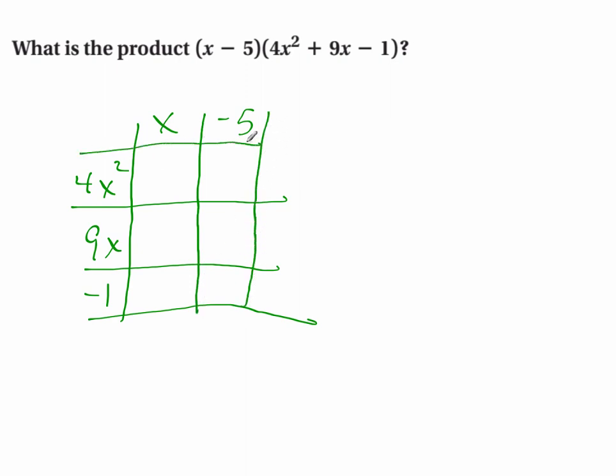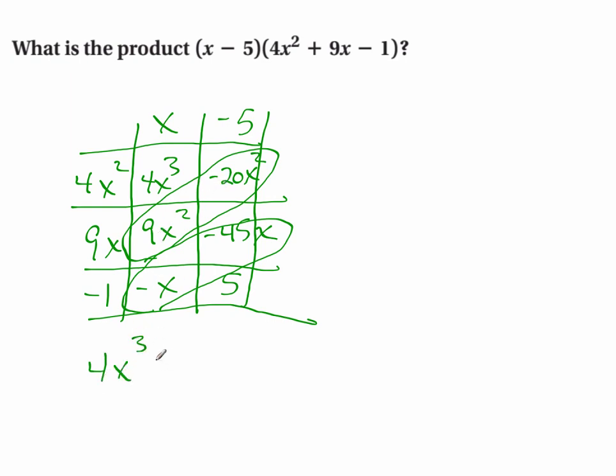So this really does help students to not lose cross terms. I had my calculus students do this once and it really helped them on the AP test. So what's the area of this square? x times 4x² is 4x³. x times 9x is 9x². x times -1 is -x. -5 times 4x² is -20x². -5 times 9x is -45x. And -5 times -1 is 5. Now up diagonals they're going to add. 4x³ - 11x² - 46x + 5.